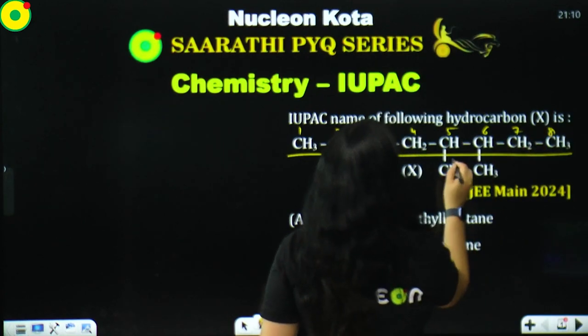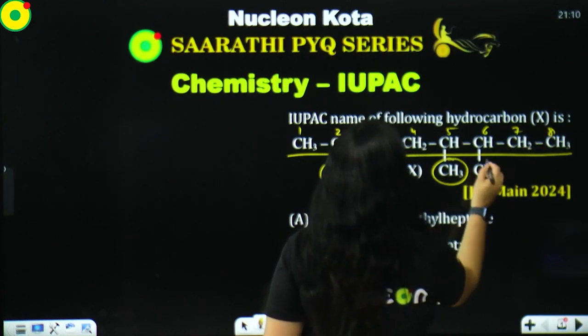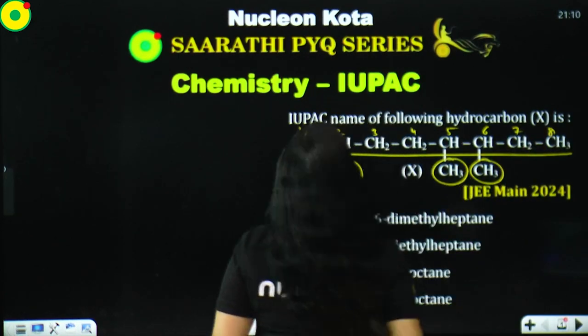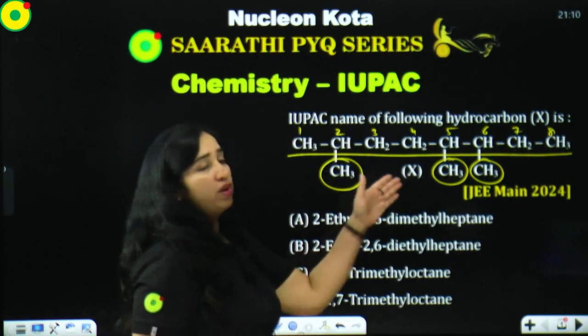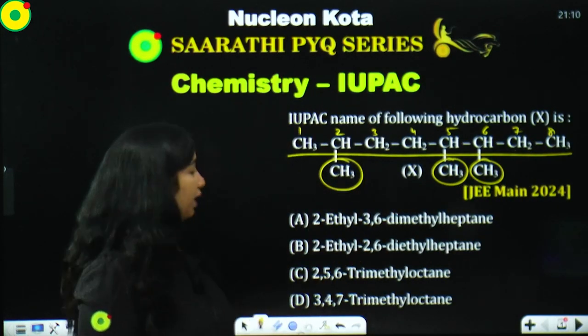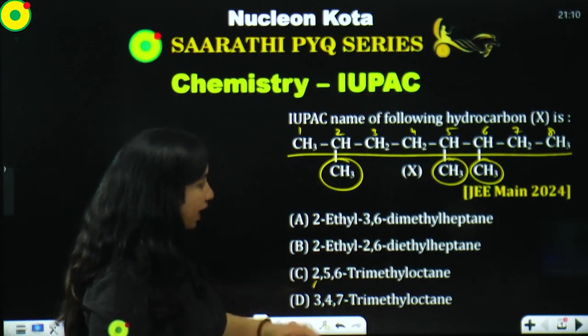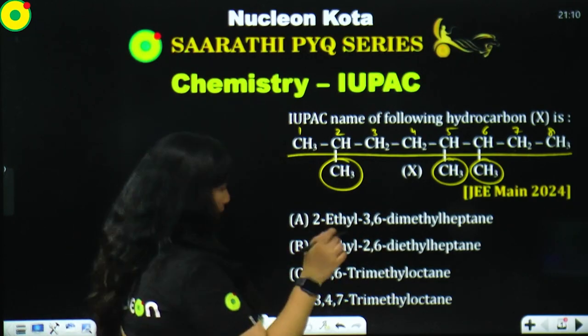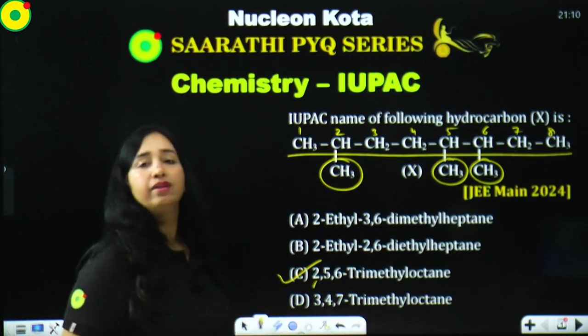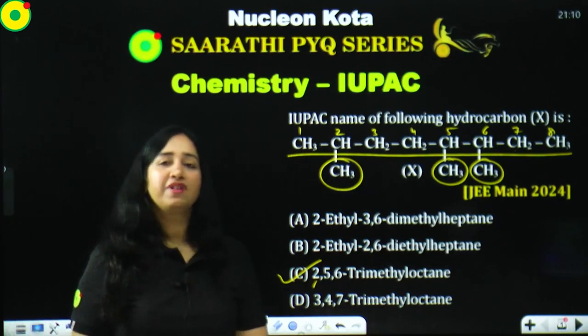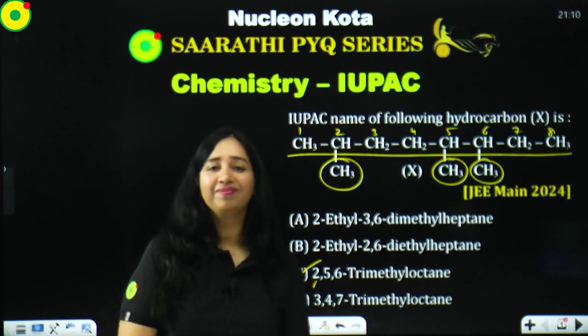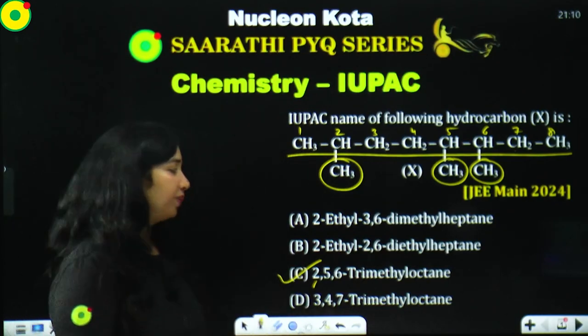Now, how easy it is — positions 2, 5, and 6 are methyl groups. So, 2,5,6-trimethyl. The carbon chain is octane. Okay? Simple. Thank you.